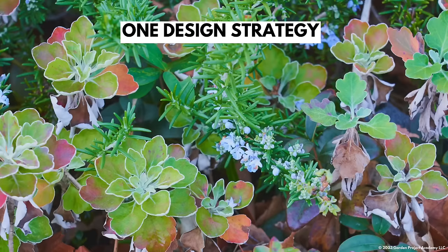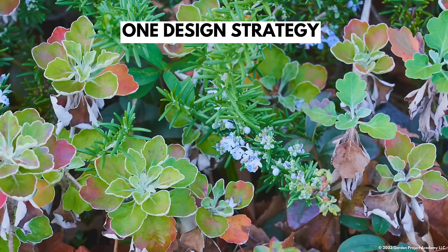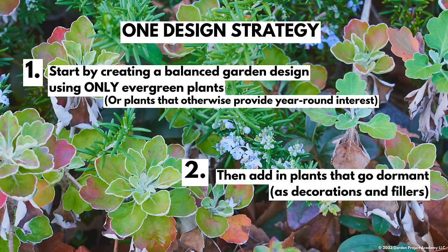One design strategy to avoid an empty winter garden is to start your design with exclusively evergreen plants, or plants that are otherwise interesting in the winter, and create a spacious design that looks balanced and beautiful in the winter first. Then you move on to the deciduous plants and herbaceous perennials, adding them as you desire until you reach the desired density or run out of room for more plants in the space.